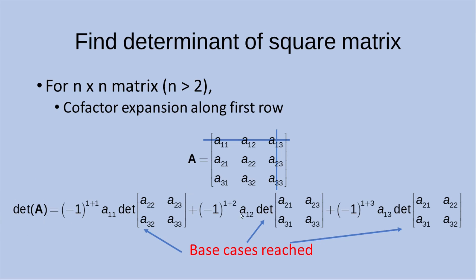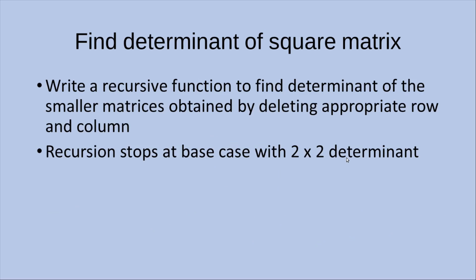That's why we have three base cases reached when we want to handle the determinant of the 3x3 matrix. In general, we can describe the algorithm as follows: write a recursive function to find out the determinant of the smaller matrices obtained by deleting the appropriate rows and columns. The recursion can stop at the base case when we reach the 2x2 matrix, from which we can find out the determinant directly.